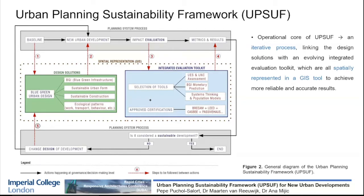Another innovation inside this framework is that all these solutions and metrics are represented spatially in a GIS tool. Once we have results from the integrated evaluation toolkit, we need to ask: is this considered a sustainable development? If yes, this is the end of the process. If not, then we need to change the design of the development, come back to the design solutions, get a new urban development, and this iterative process continues until the answer is yes.